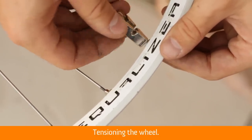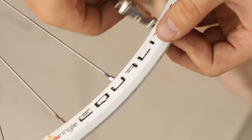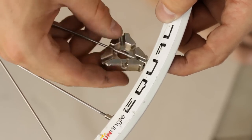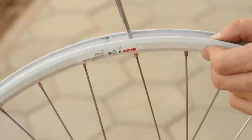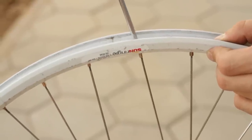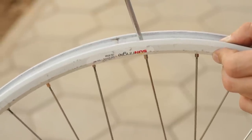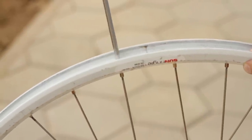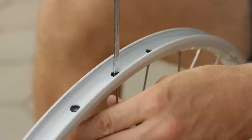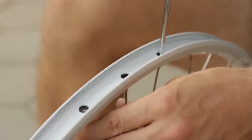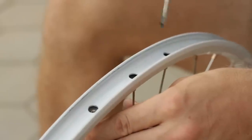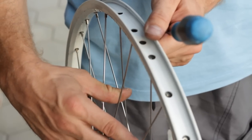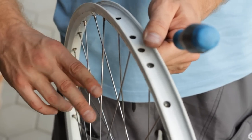Tensioning the wheel. Tighten each nipple with a spoke wrench until only three threads are visible beyond the bottom of the nipple. Go around the wheel tightening each nipple a half turn. Do this uniformly so that the wheel is not thrown out of true. Squeeze pairs of spokes toward each other and compare their tension.